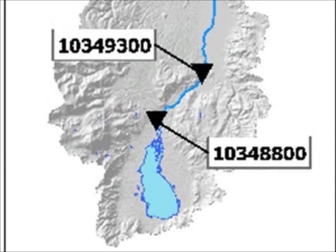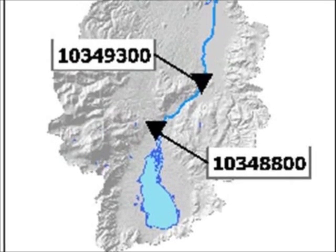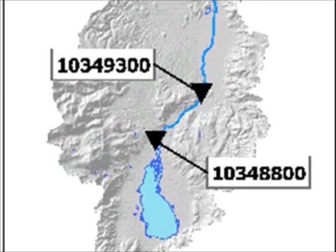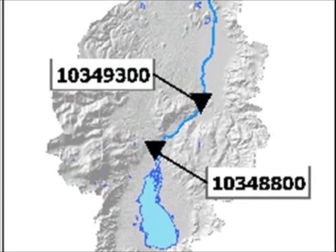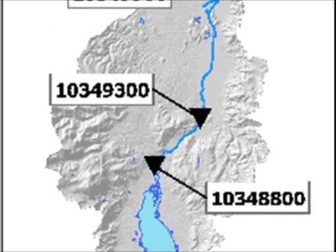This is the watershed for Steamboat Creek, which flows north from Washoe Valley until it joins the Truckee River, just east of the city of Reno.